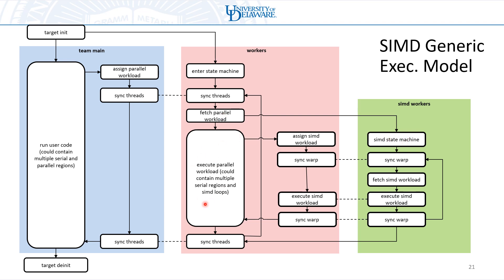While the SIMD leaders are executing that parallel workload, they can encounter any number of SIMD loops. Whenever they encounter a SIMD loop, they assign the SIMD workload and signal to their workers through a warp-level synchronization that there is a SIMD loop to be executed. Those workers fetch that workload and then the leader and the worker execute that SIMD loop together. When they're done, they synchronize again, the workers go back to being idle, and the SIMD leader continues executing the parallel region until it finishes.